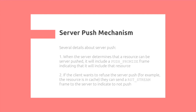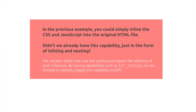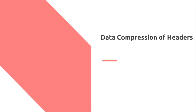When the server determines that a resource can be server pushed, it includes a push promise frame indicating it will include it as part of the response. The client can then choose to refuse it using an RST_STREAM frame to indicate it does not want the push — for example, if the resource is already in cache. You could have simply inlined the CSS and JavaScript in the original HTML file, but now by using RST_STREAM, we can natively toggle this capability on or off.